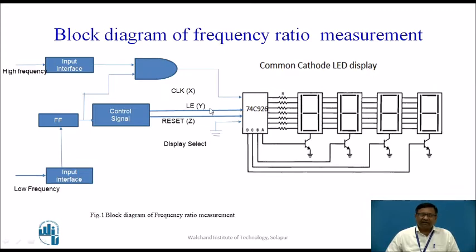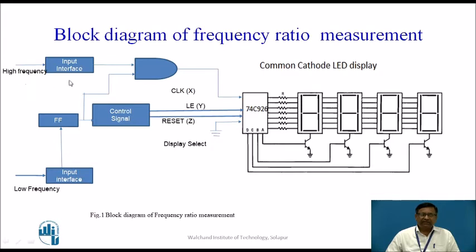In the frequency ratio measurement scheme, there are two frequencies: one is high frequency and another is low frequency, and we are finding the ratio of these two frequencies. To find the ratio, the high frequency signals are given through an input interface used as a signal conditioning circuit so that the output is compatible with the digital logic gate.